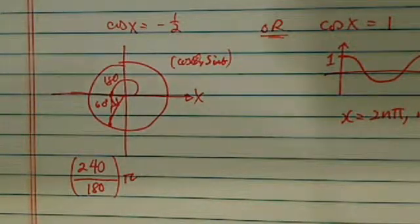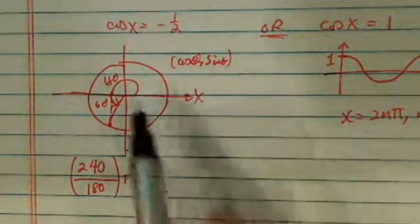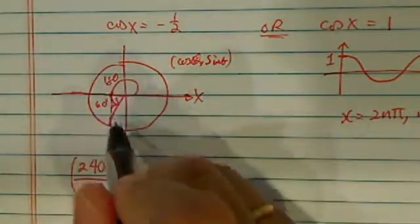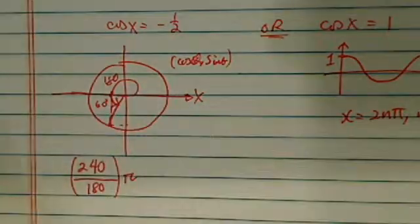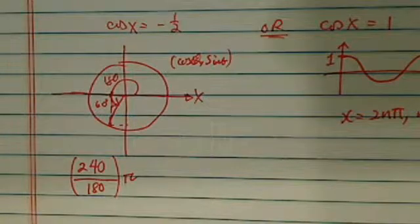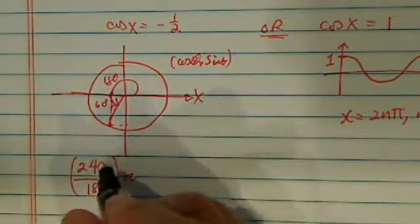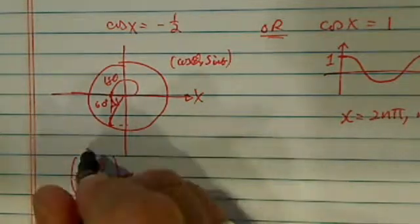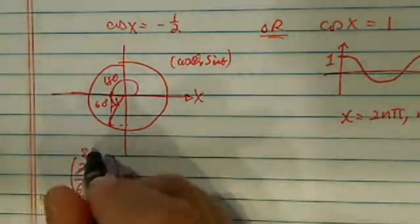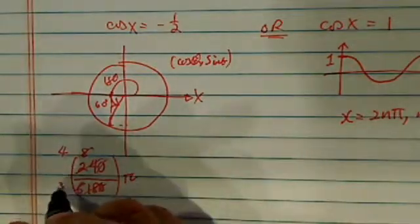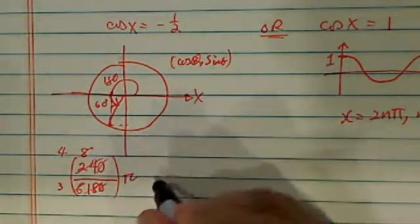The reason I got 240 is that this one is a 60 degrees, because this is a longer leg here and this is the shorter leg. So 240 and 180. Let's divide this one out. So 3, there's 8, there's a 6. Divided by 2, there's a 4, and divided by 2, there's 3. So it's 4 pi over 3.